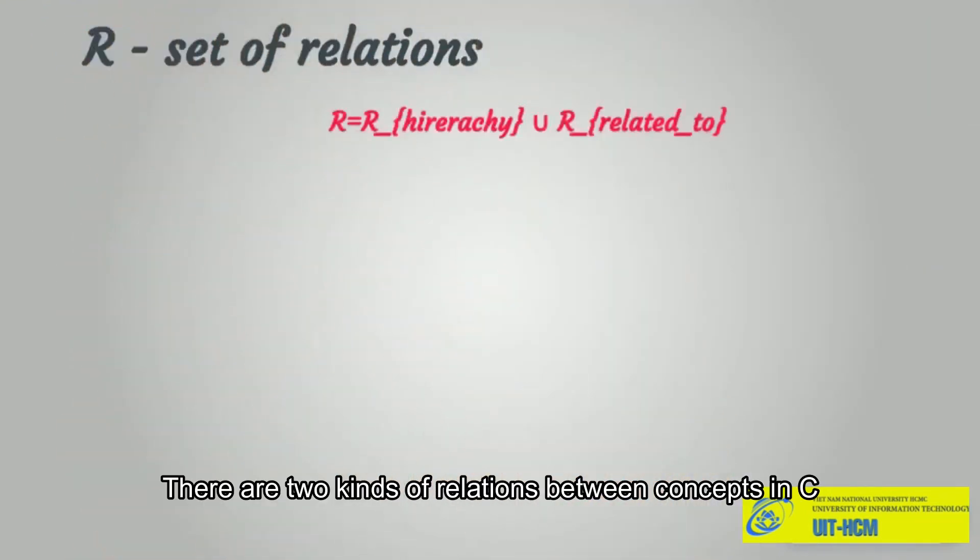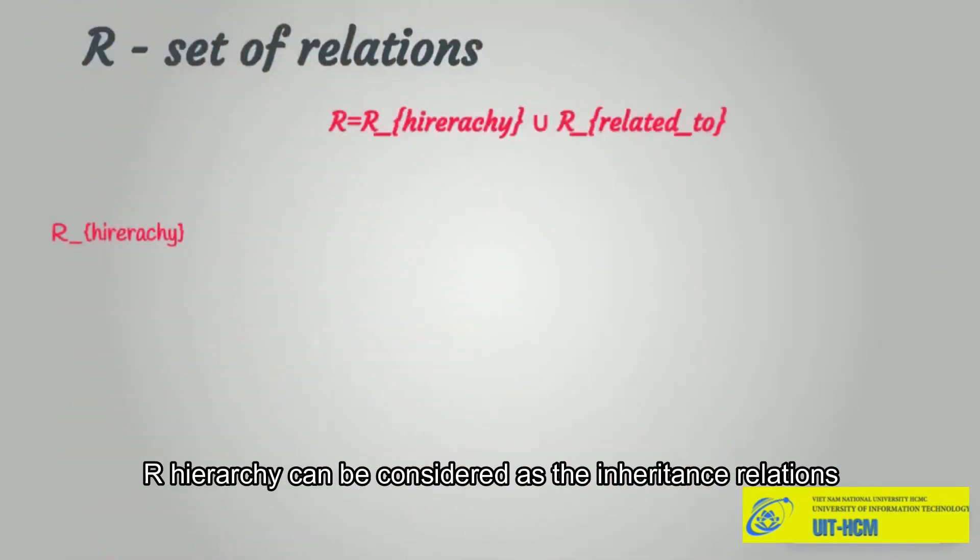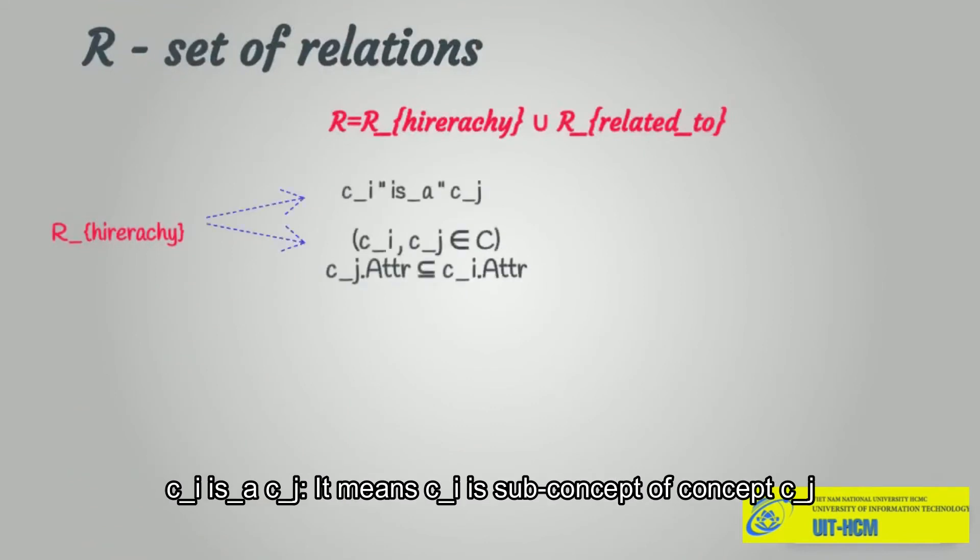There are two kinds of relations between concepts in C. Our hierarchy can be considered as inheritance relations. C_i is a C_j means C_i is a sub-concept of concept C_j.